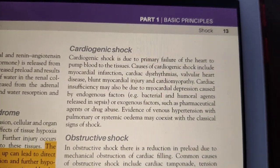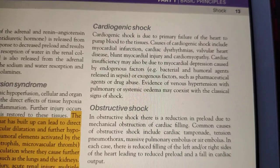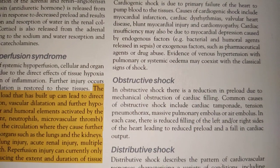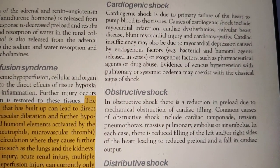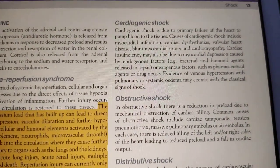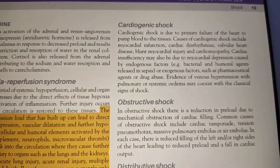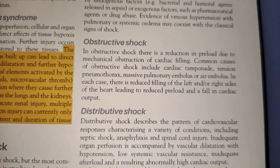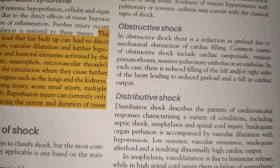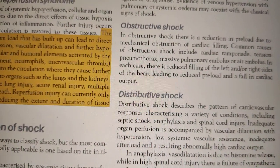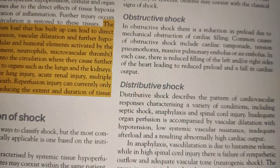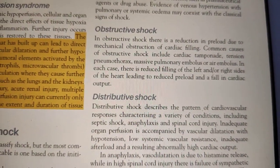Cardiogenic shock is due to the inability of the heart to pump, occurring due to myocardial infarction, arrhythmia, valvular dysfunction, or cardiomyopathy. Endogenous toxins like sepsis may also lead to cardiogenic shock. In obstructive shock, something is preventing proper filling of the right or left heart — it may be due to cardiac tamponade, tension pneumothorax, pulmonary embolism, or air embolus.